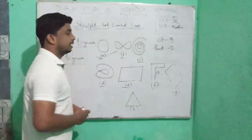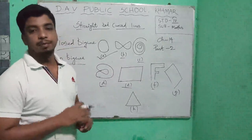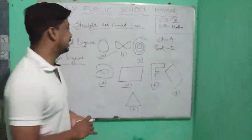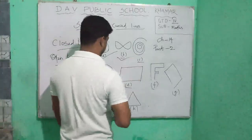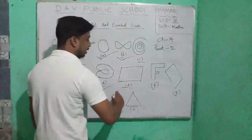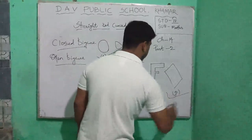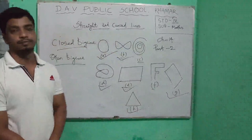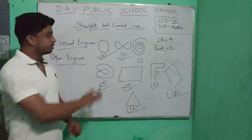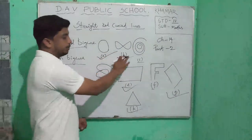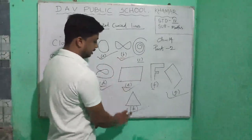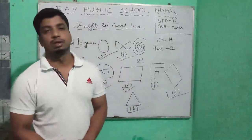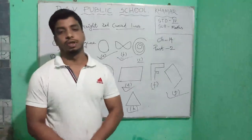I have written some letters here. Closed figures are like A, B, D, E, G, H — these are closed figures. So A, B, D, E, G, H are called closed figures.